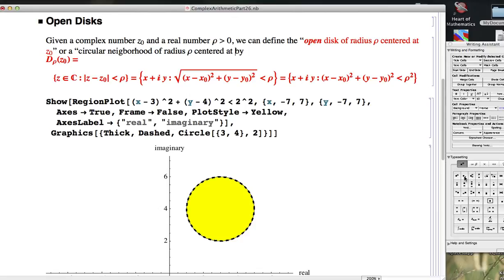That's another term, at least that's what Saff and Snider used. The term neighborhood is kind of a topological term that I'm not going to go into beyond what I'm just telling you right now.